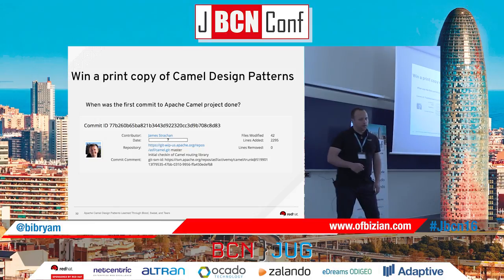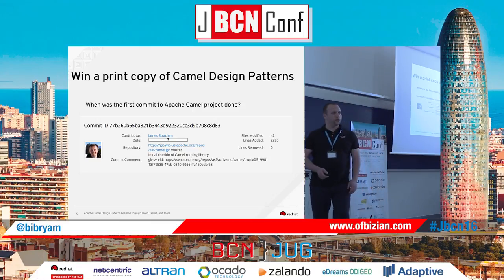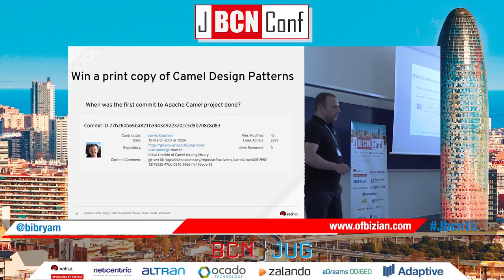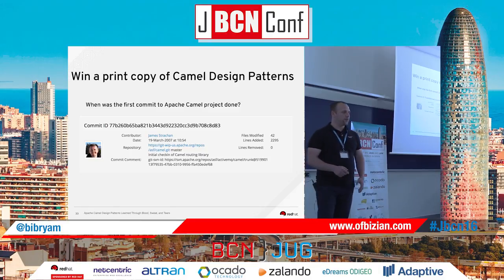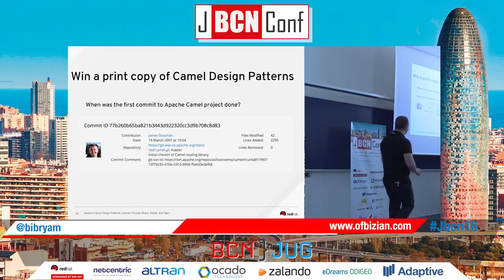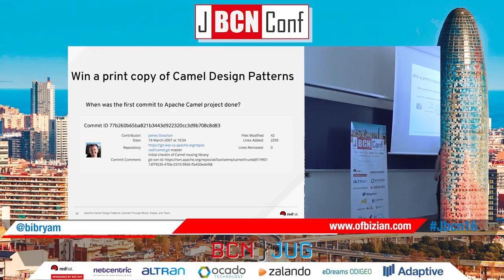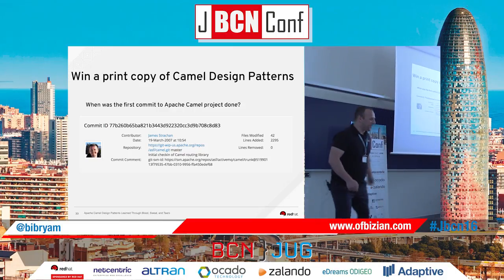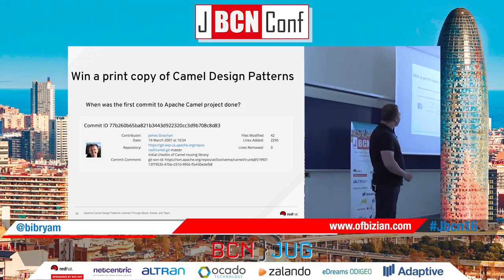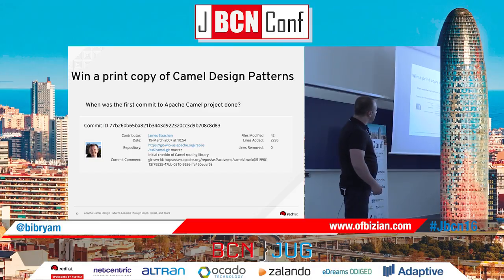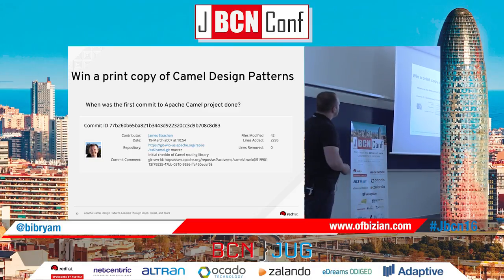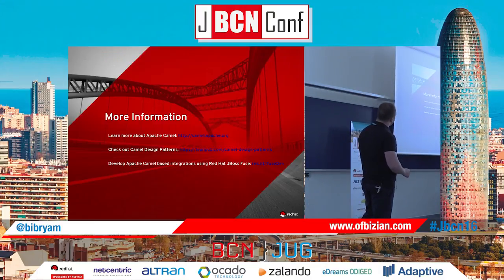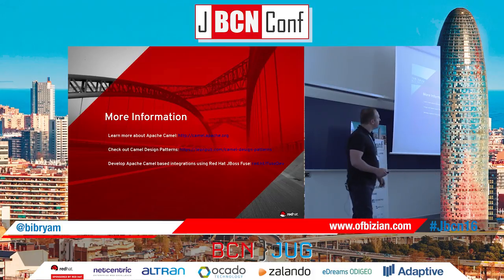I have a copy of my book to give away. Who knows when the very first commit to Apache Camel was made by James Strachan? It was March 2007 — does anyone know the date? Someone guesses the 19th — that's correct, or close enough.